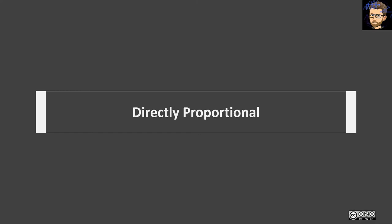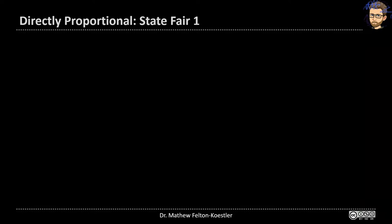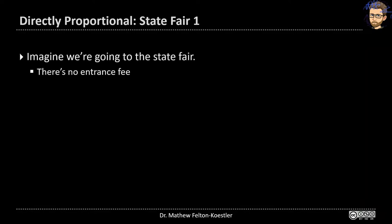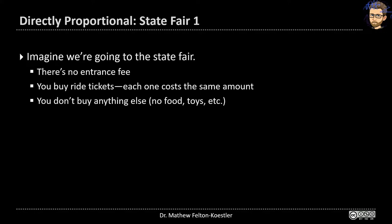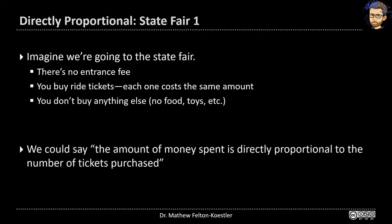We're going to talk first about situations where there's a directly proportional relationship between two variables, starting with a straightforward example of going to a state fair. Imagine you're going to the state fair — there's no entrance fee, so you can just walk in, but to go on rides you need to buy ride tickets, and each one costs the same amount. We're not going to buy any food or toys, nothing like that. In that situation, the amount of money spent is directly proportional to the number of tickets purchased, and we want to talk about how to represent that mathematically.